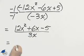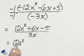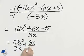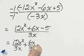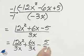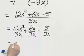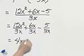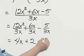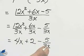Distributing, I have 12x squared over 3x, plus 6x over 3x, minus 5 over 3x. And simplifying, there is 4x plus 2 minus 5 divided by 3x.